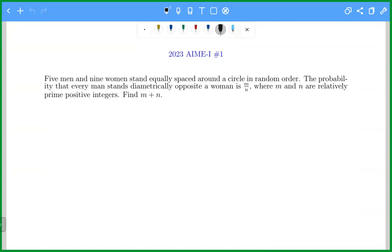Five men and nine women stand equally spaced around the circle in a random order. The probability that every man stands diametrically opposite a woman is m over n, where m and n are relatively prime positive integers. Find m plus n.